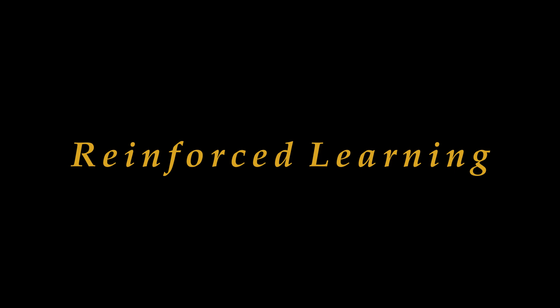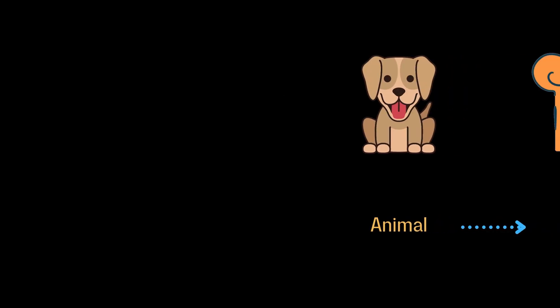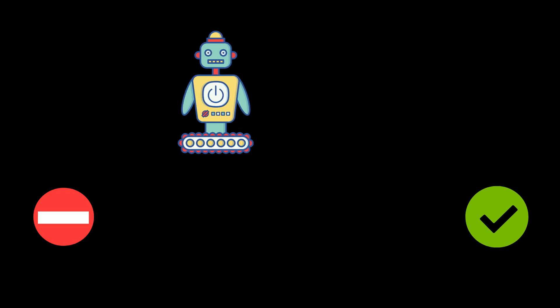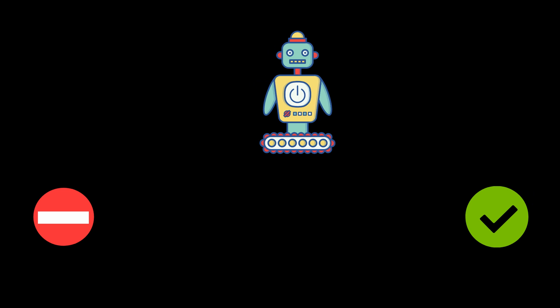To understand reinforcement learning in simple terms, consider animal training. Animal training involves giving rewards to animals for desired behavior and not giving a reward when the desired behavior is not achieved. This positive reinforcement makes the animal learn how to behave in a particular environment. Reinforcement learning is a behavioral machine learning algorithm where software agents are trained by means of trial and error — rewarded for positive actions and punished for negative actions — allowing the agent to maximize right moves and minimize wrong moves to determine ideal behavior within a specific context.